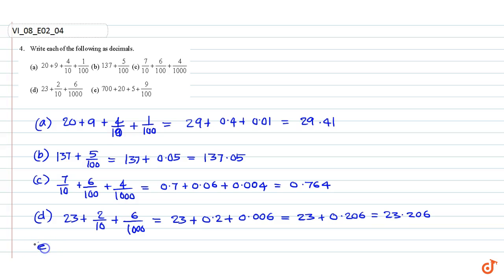Part (e): 700 plus 20 plus 5 plus 9 by 100, equal to 725 plus 0.09, equal to 725.09.